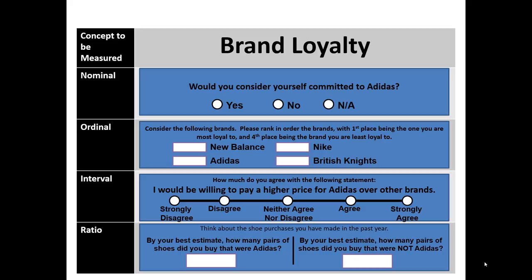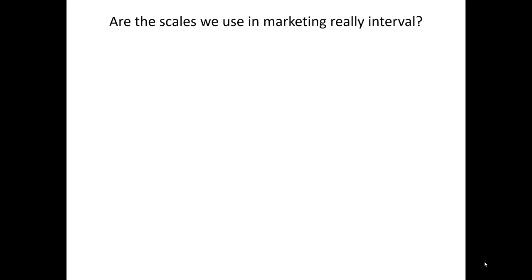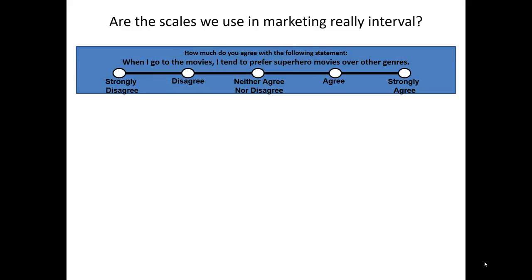I just provided it here as illustration of the four different measurement levels. Earlier, I said that the interval scale we used for the brand loyalty measure of Adidas is treated as interval — what did I mean by that? Consider this example: When I go to the movies, I tend to prefer superhero movies over other genres. Here we see a standard five-point Likert scale. If it's an interval level scale, we treat each one of these points as equally distant from one another. And clearly here, when we see this on this slide, they are equally distant from one another. But these equal distances on paper are not necessarily how they map onto someone's mind.